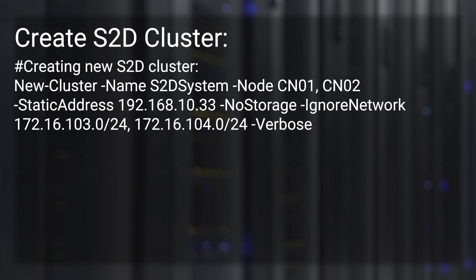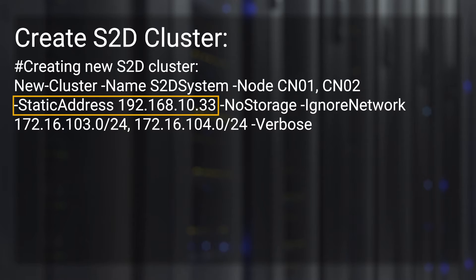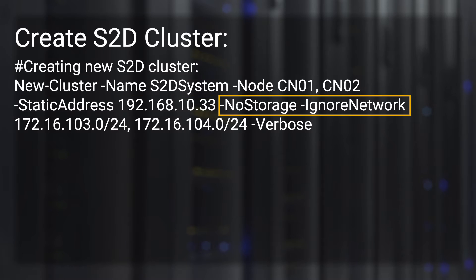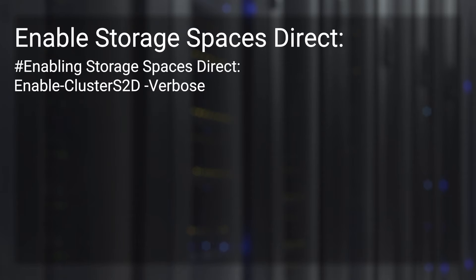Then we're going to create the cluster using the New-Cluster command. We're going to call the cluster S2D system, specify the cluster nodes, and set a static address for the cluster. We're also using the no-storage and ignore-network switches. These are my storage networks — since S2D is not enabled at this point, we want to ignore those during the creation of the cluster.